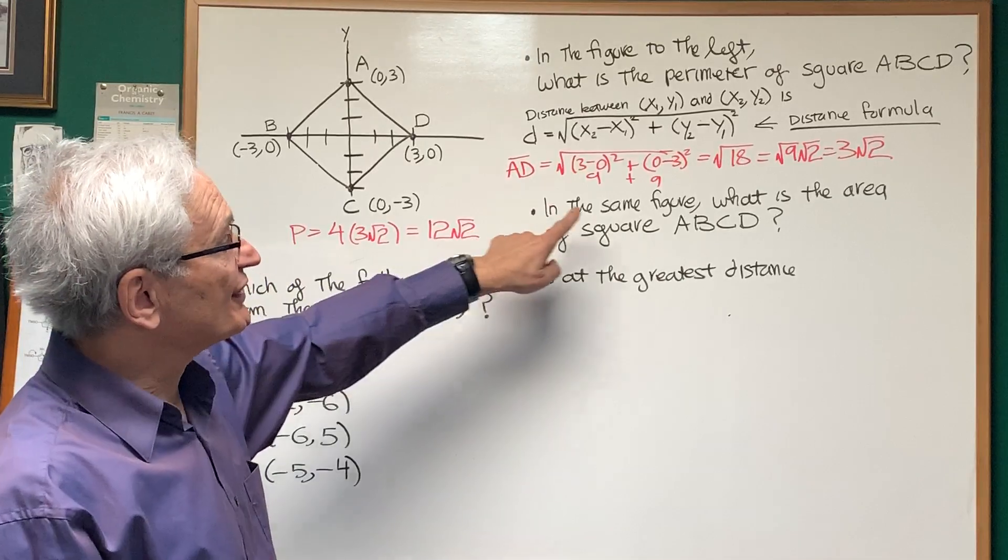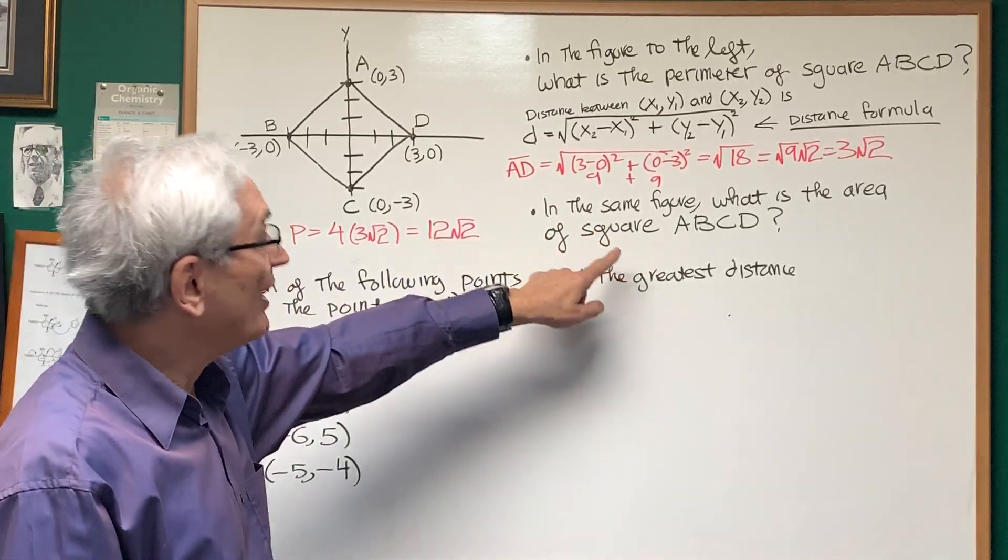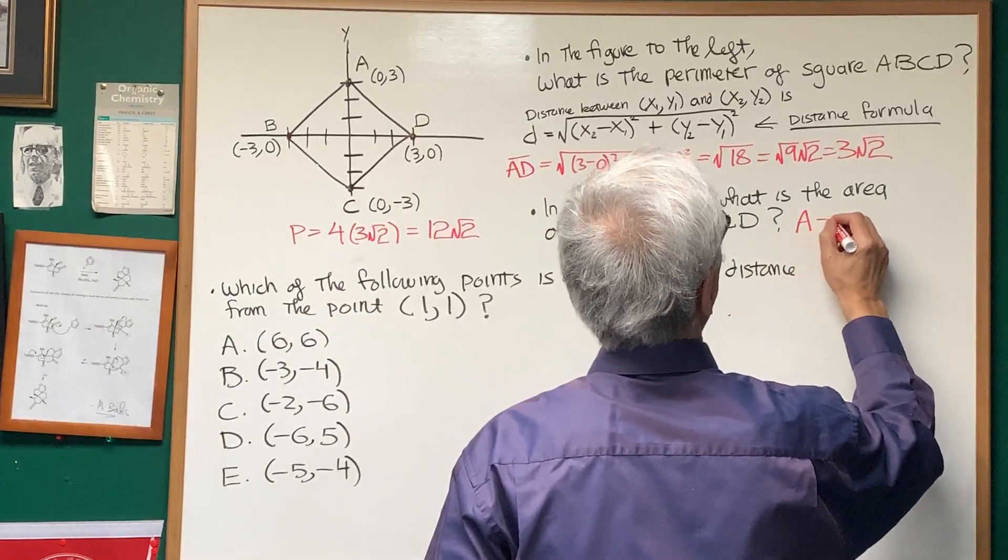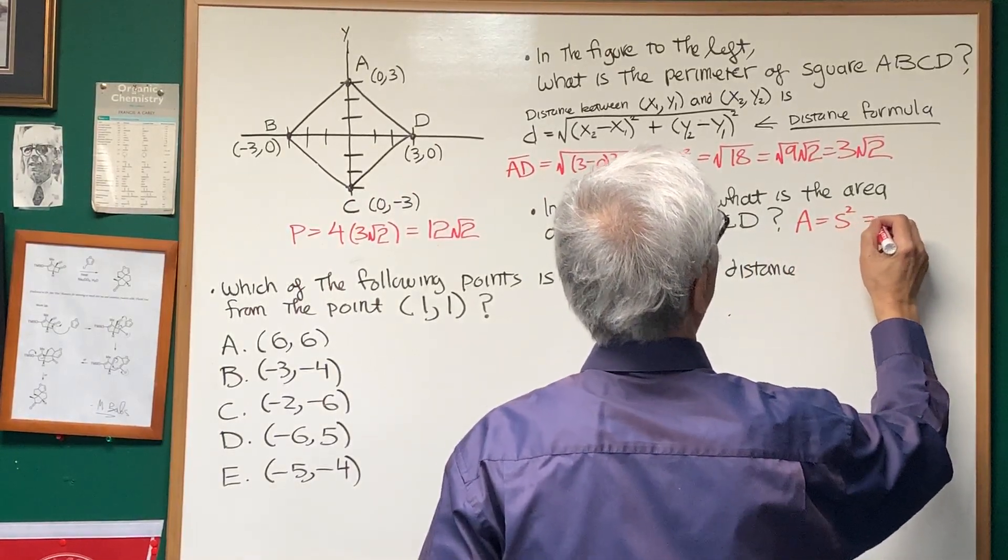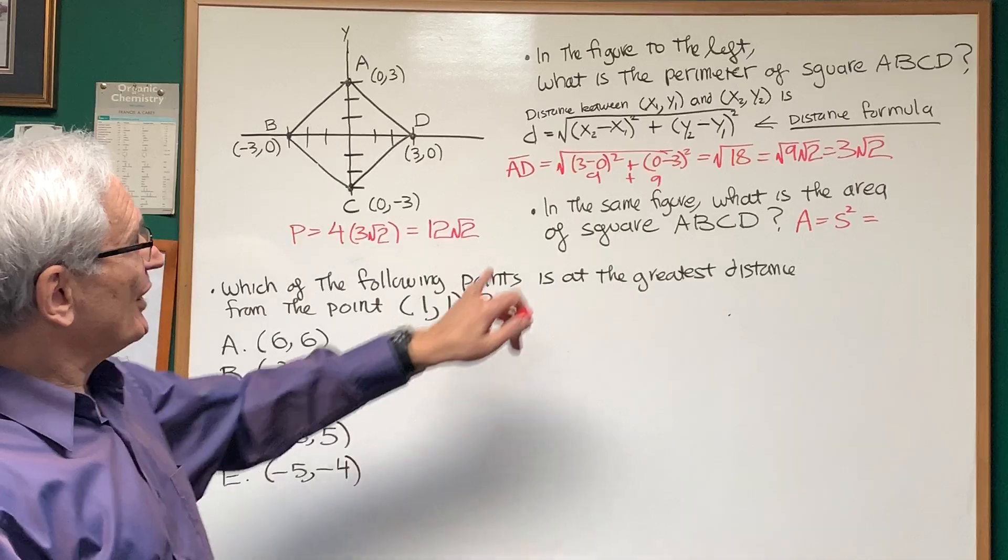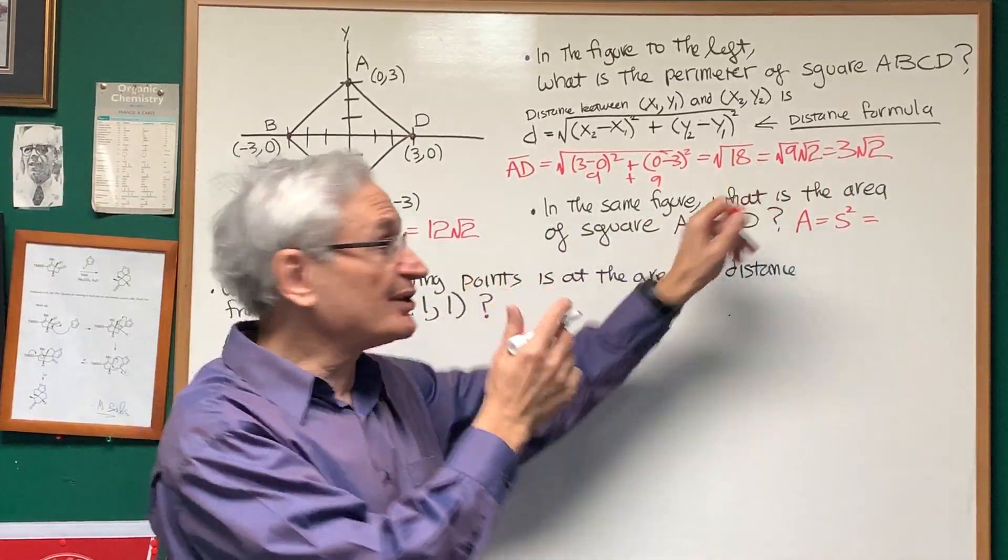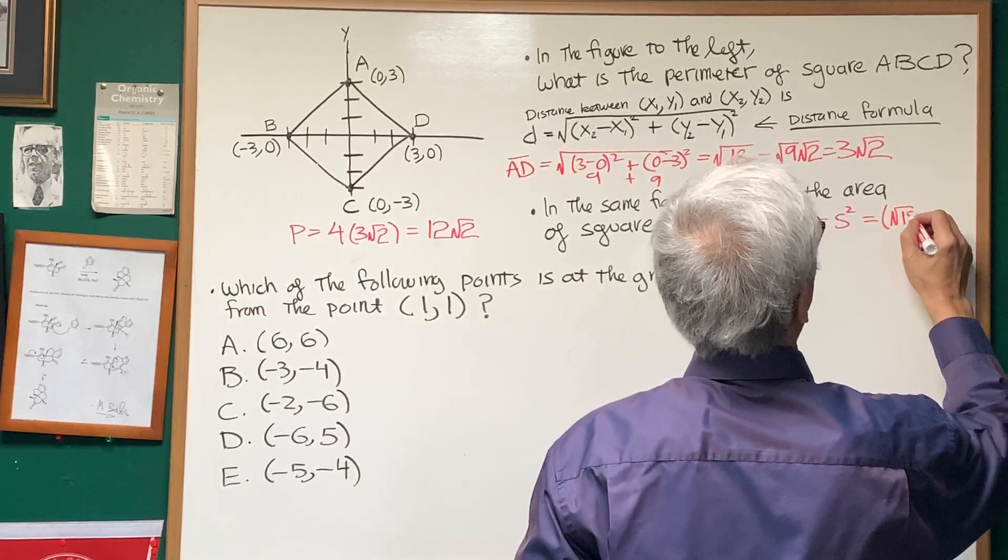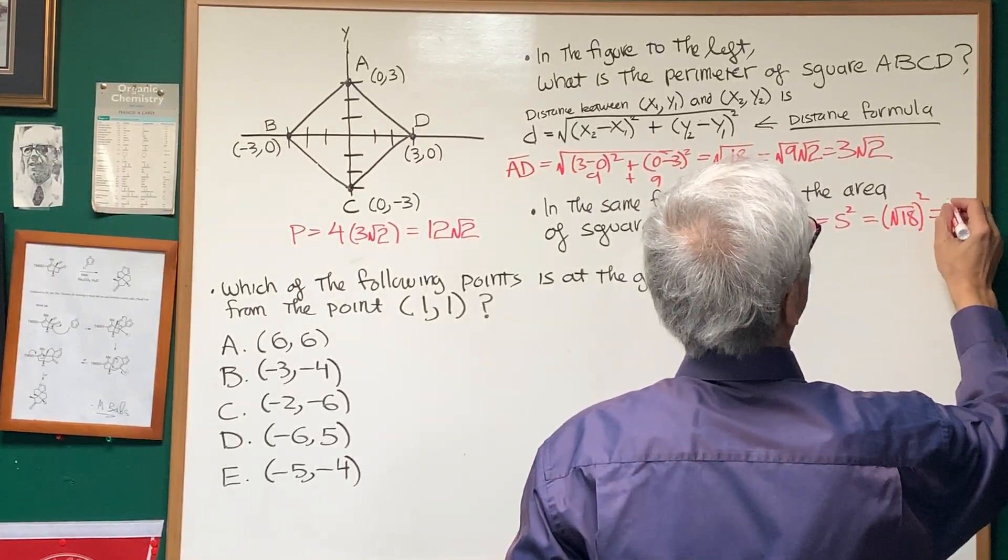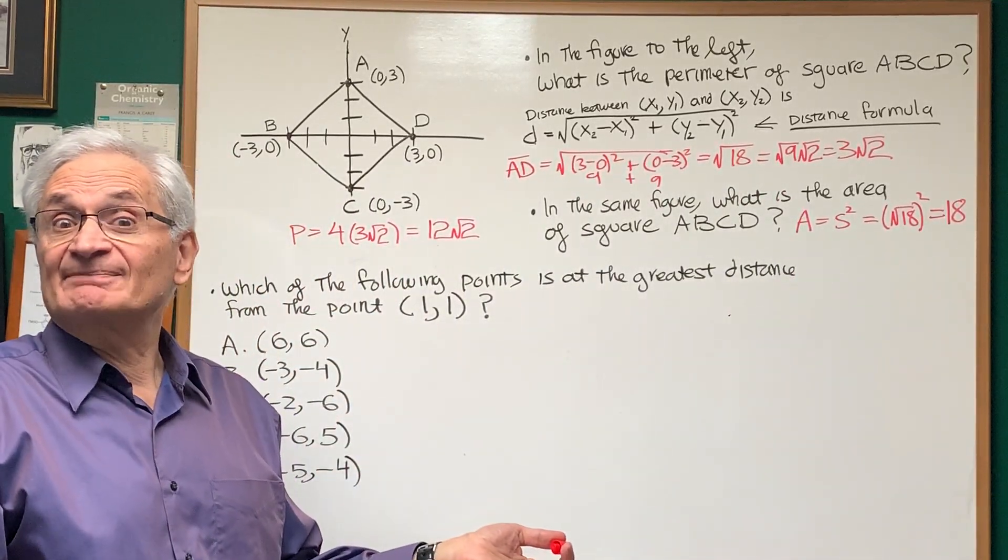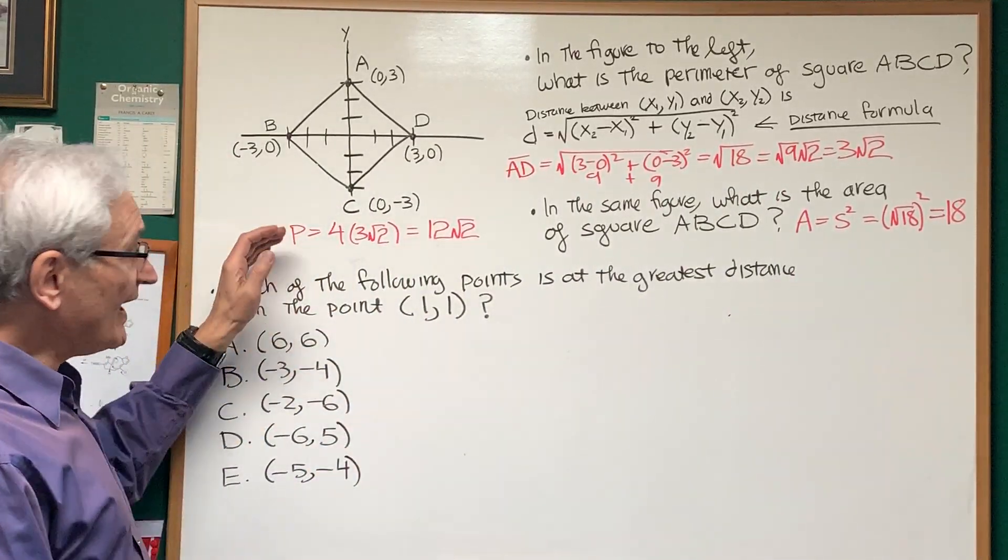Second question: in the same figure, what is the area of the square ABCD? Well, the area is simply one of the sides squared. So what do we have? We already found out what one of the sides is: the square root of 18. So this is going to be the square root of 18 squared, so the area of this square is 18.